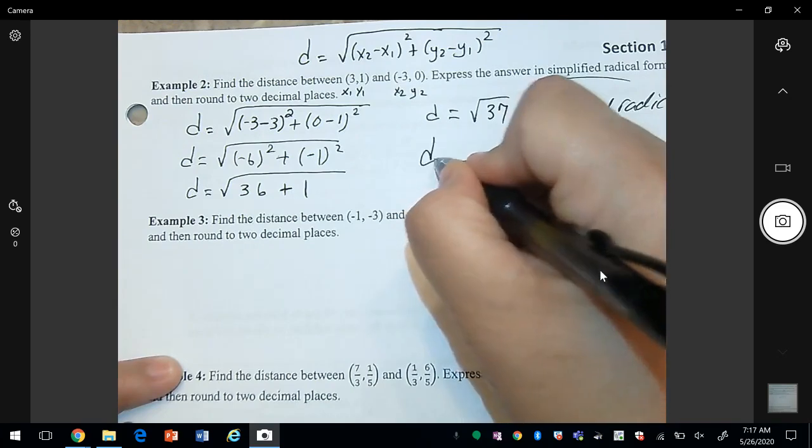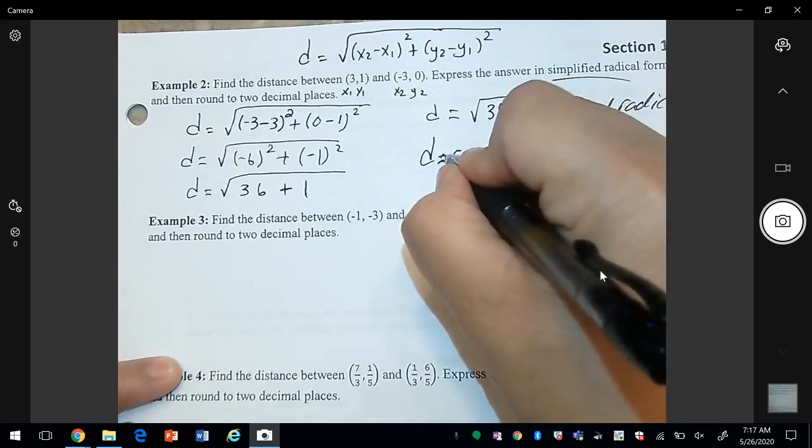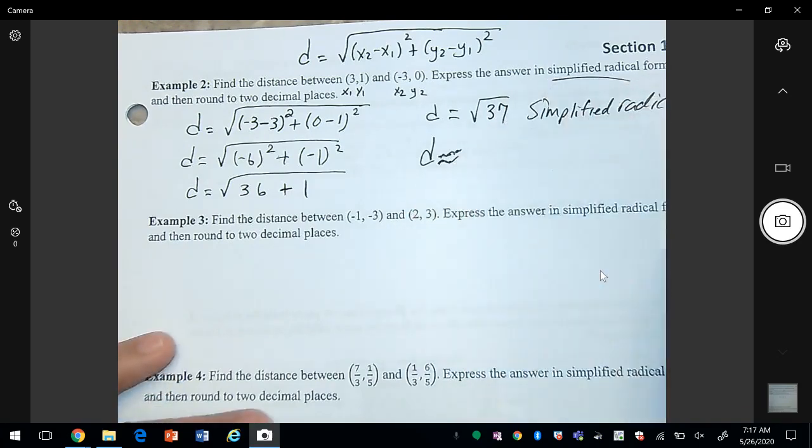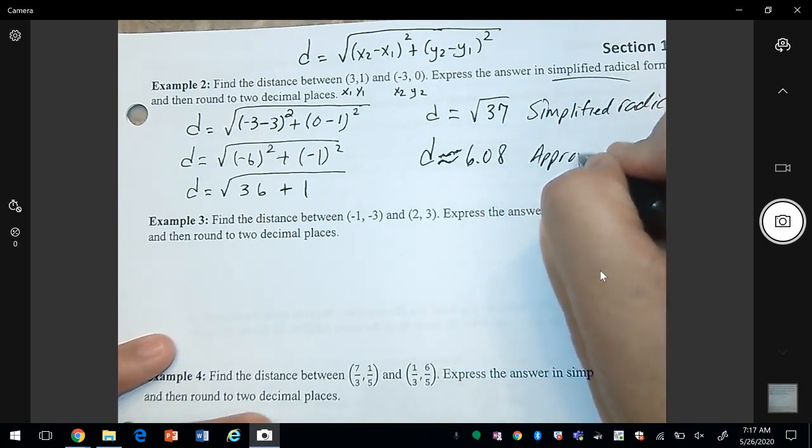And then if we get a decimal, we can put it into the calculator. So it's approximately 6.08. So this is the approximation.